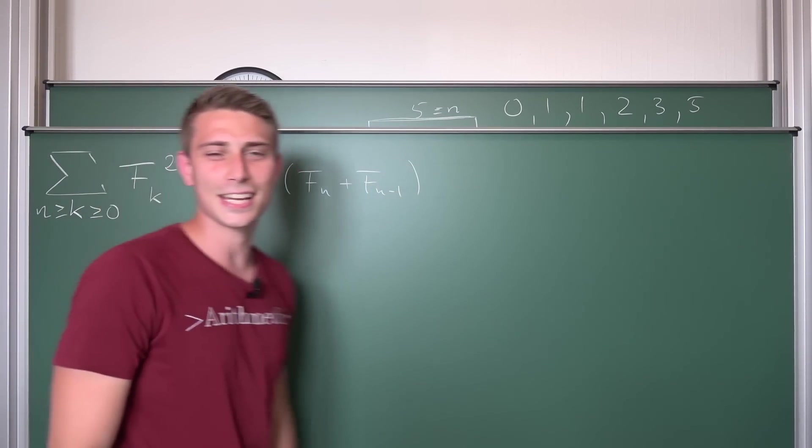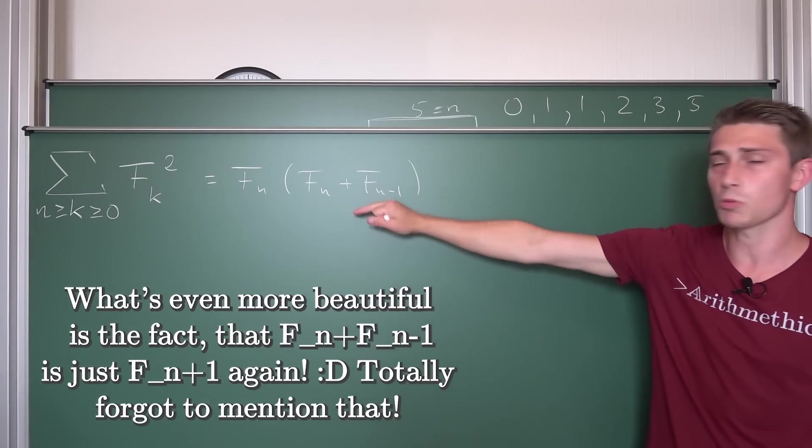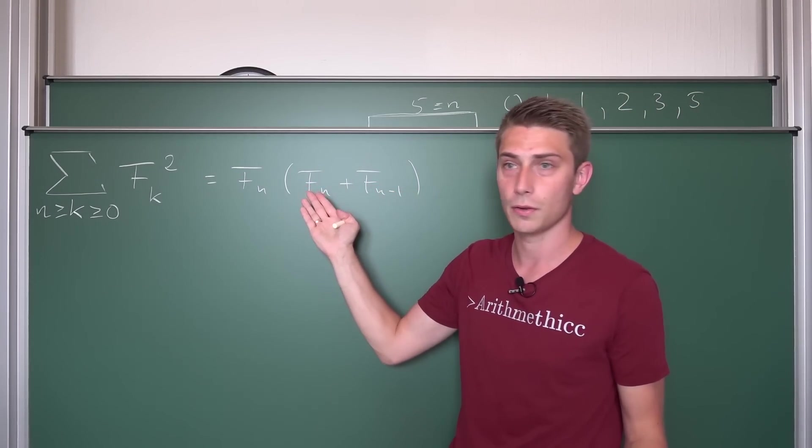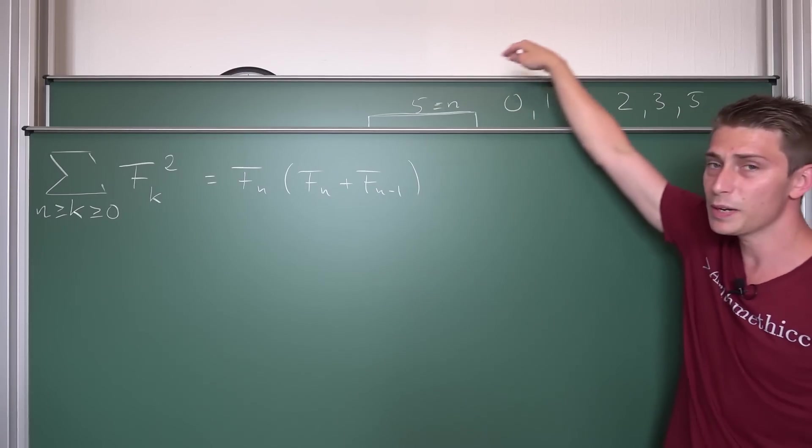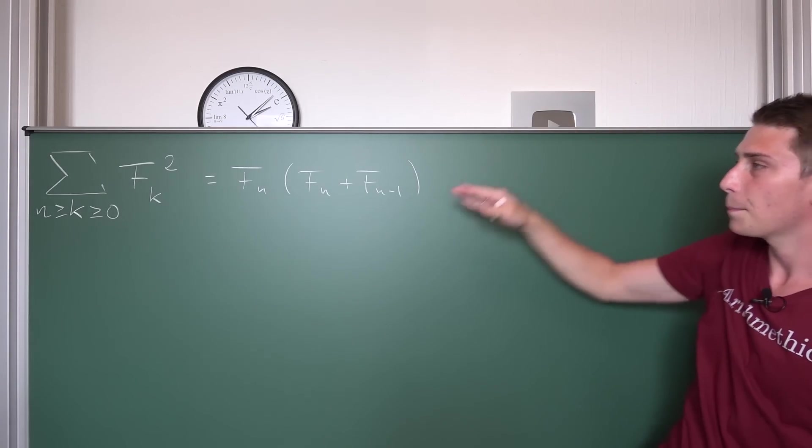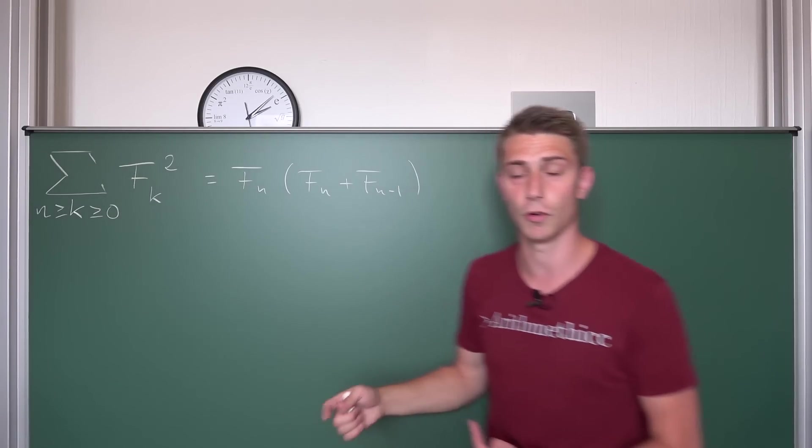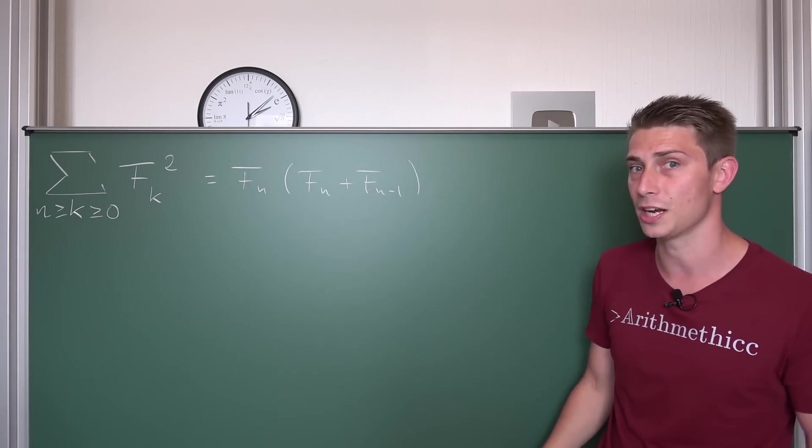And there we go! Isn't that cool? This right here is most probably our solution and you can actually prove this using induction. We can go a step further actually by expanding everything a bit out and then you can see at a glance that this is indeed our summation of all the squares up until the nth Fibonacci number.